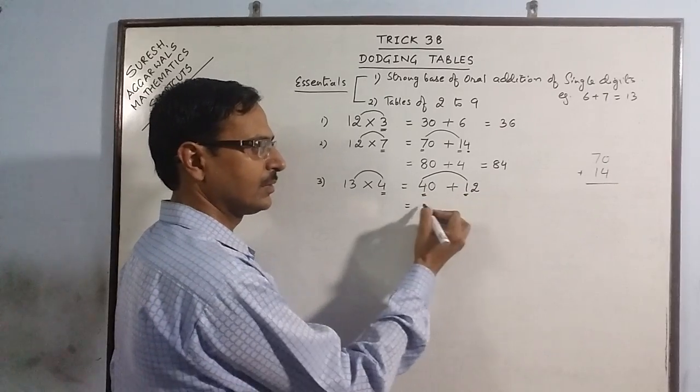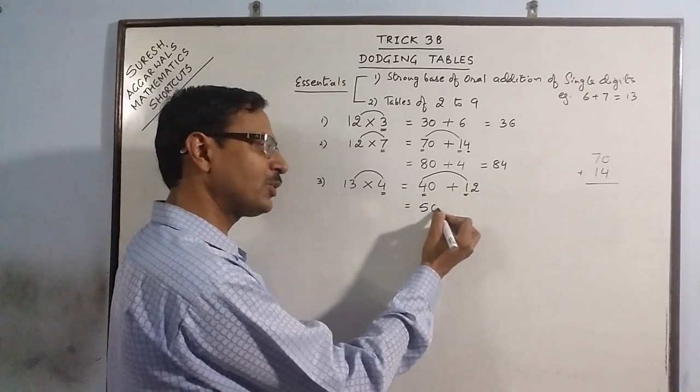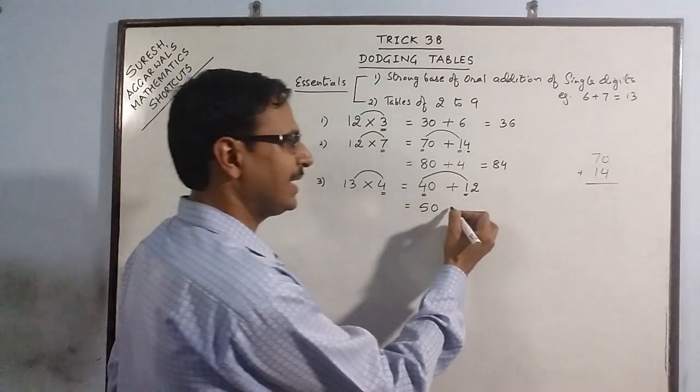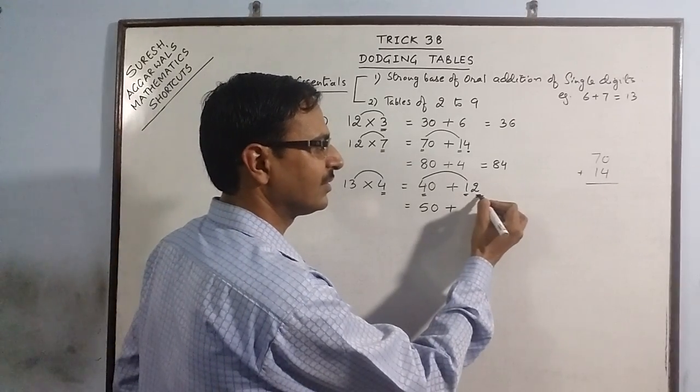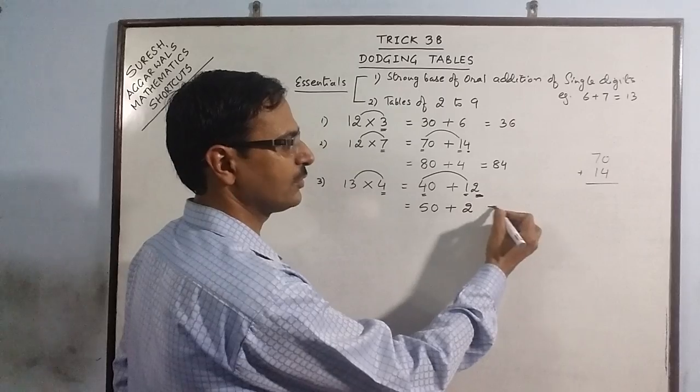Tens places: 5, then again put a 0 and then add this digit, 2. So put a 2.